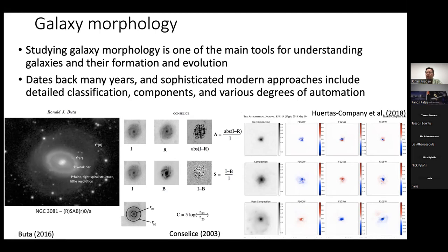In the middle, you see the CAS system — three parameters that can be easily automated from galaxy images: concentration, asymmetry, and smoothness. With those three parameters you can do a lot in putting galaxies into their different morphology boxes. On the right is an illustration of a modern approach using machine learning and artificial intelligence to look at images and sort them into different categories.